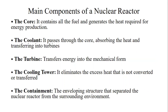Let's see the main components of nuclear reactor. First, the core — it contains all fuel and generates the heat required for energy production. Coolant — it passes through the core absorbing the heat and transferring it to the turbines. Turbine — which transfers energy into mechanical form. The cooling tower — it eliminates excess heat that is not converted or transferred. And the containment — the enveloping structure that separates the nuclear reactor from the surrounding environment.